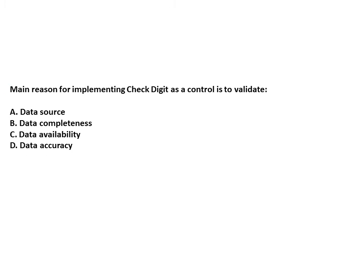The main reason for implementing check digit as a control is to validate data accuracy, since check digit is used to identify transcription and transposition errors. Key distinction to remember: when the objective is data completeness, the answer is parity bit; when the objective is data accuracy, the answer is check digit.